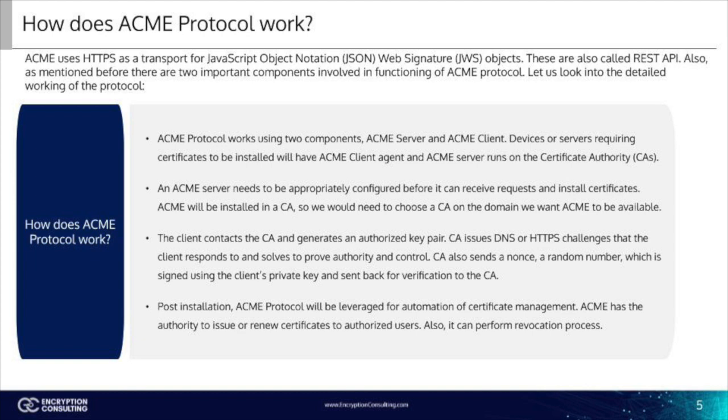Now we're going to go over how it works. ACME uses HTTPS as a transport for JavaScript Object Notation web signature, JWS, objects. These are also called REST API. ACME Protocol works using two components, ACME Server and ACME Client. Devices or servers requiring certificates to be installed will have an ACME Client agent, and ACME Server runs on the certificate authorities.